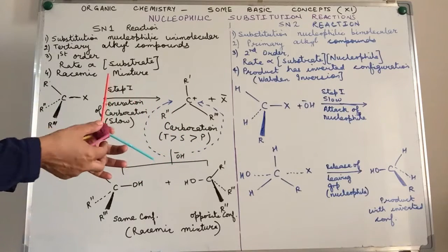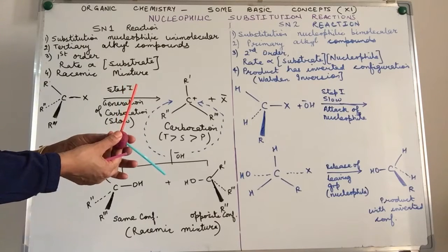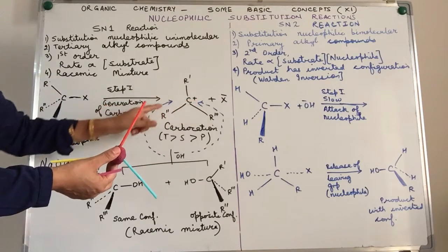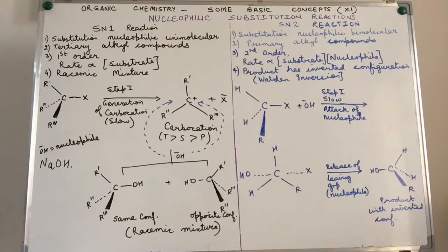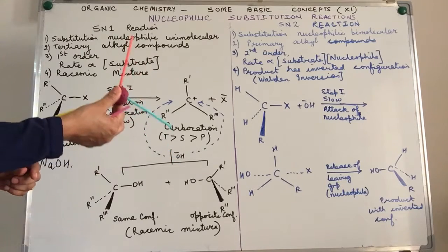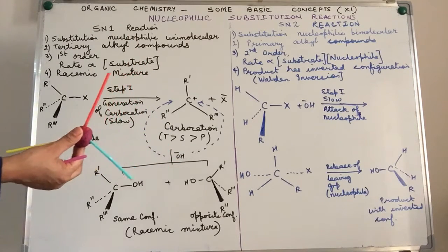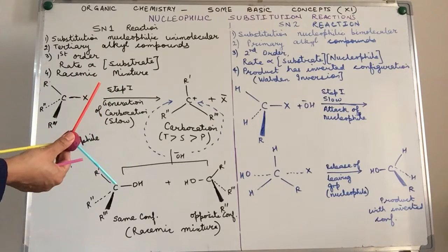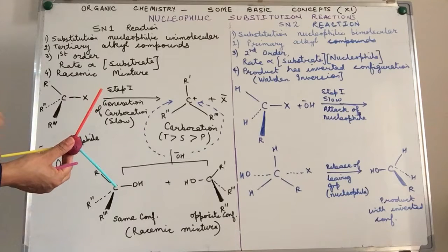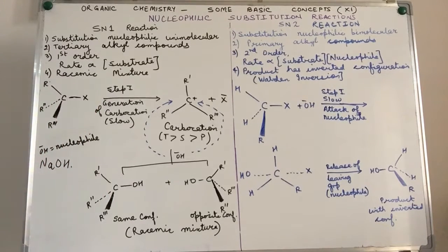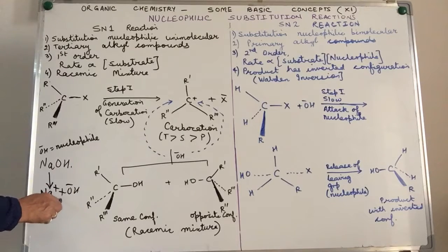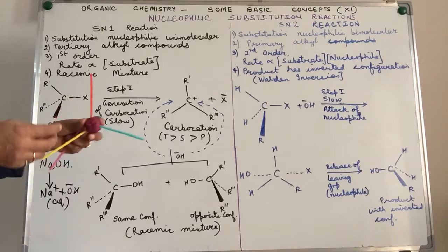This will be a very unstable species because carbon now carries a positive charge — in other words, this is a carbocation intermediate. It is highly unstable and needs something carrying a negative charge, which is what we call a nucleophile. In our example, we are using aqueous sodium hydroxide, so the nucleophile present in the reaction mixture is the hydroxyl ion, OH⁻.